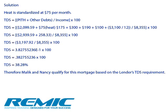Calculating the Total Debt Service, or TDS, is pretty straightforward. These two people would have $2,099.59 in proposed mortgage cost, plus $75 in heat, and then some additional costs — car payments, student loans, as well as credit card payments — and their property taxes at $3,100 per year. We take this and divide it by their income, then multiply by 100 to get the Total Debt Service. In this case, it comes out to 38.28%, which means that Malik and Nancy did qualify for the mortgage based on the lender's TDS requirement, which was 40%.